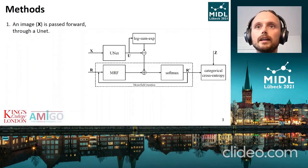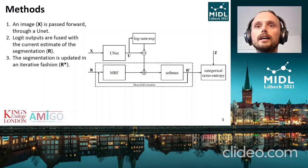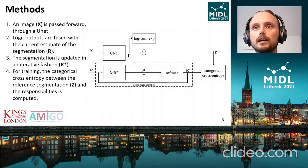This diagram shows the algorithm. An image is passed into the U-Net. The U-Net logit outputs are then fused with the current estimate of the segmentation. Next, the segmentation is updated by mean field iterations. And finally, the cross-entropy is calculated between reference and predicted segmentations.